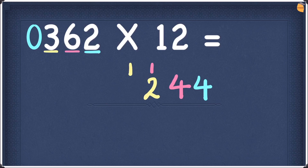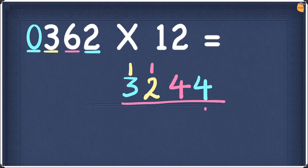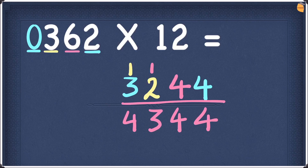Our final digit is 0. Double 0 is 0. Add this to the number on the right hand side, which is 3. 0 plus 3 is 3. Write this 3. Now let's add these numbers up: 4, 4, 2 plus 1 is 3, and 3 plus 1 is 4. So the answer is 4344.